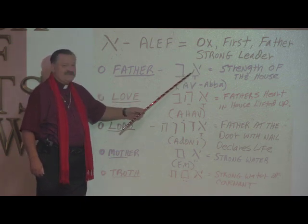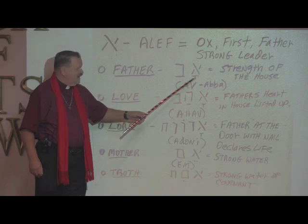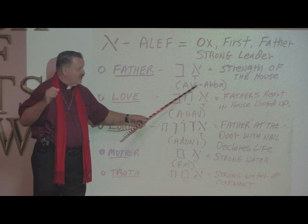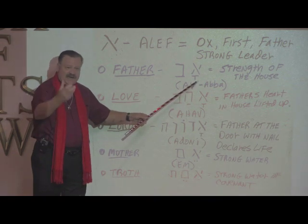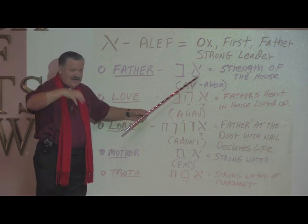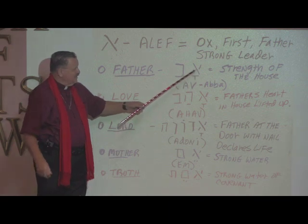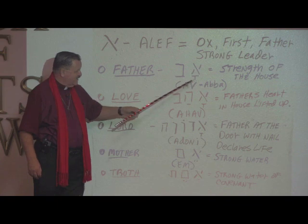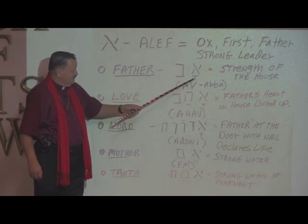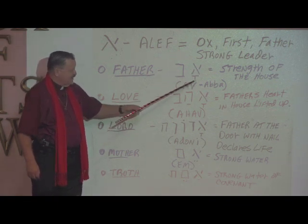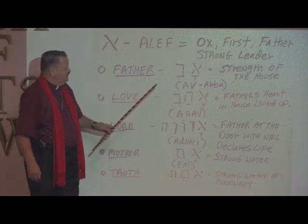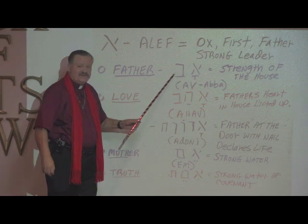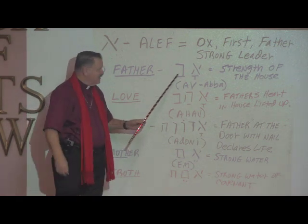Aleph itself does not have a sound — only if it has a vowel. God chooses to identify himself and the earth with man, or his son, so there's a revelation of the father. The father has chosen something to reveal itself, in this case the vowel. So we have A-V. That's how you pronounce that — 'Av.' And what does it mean? The strength of the house. That's who the father is. He's the strength of the house.